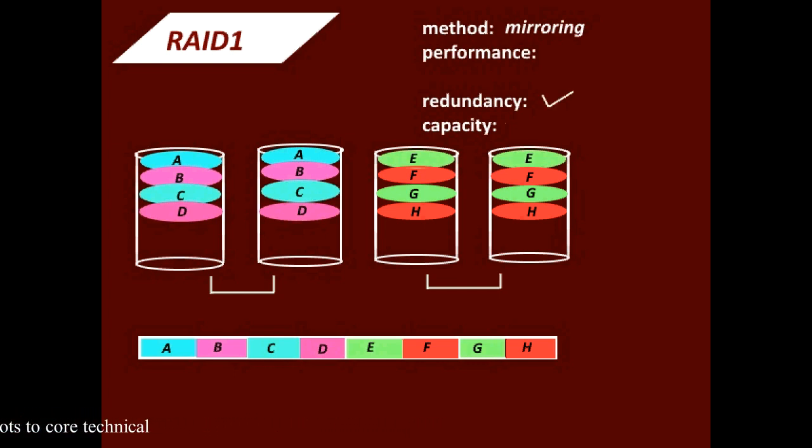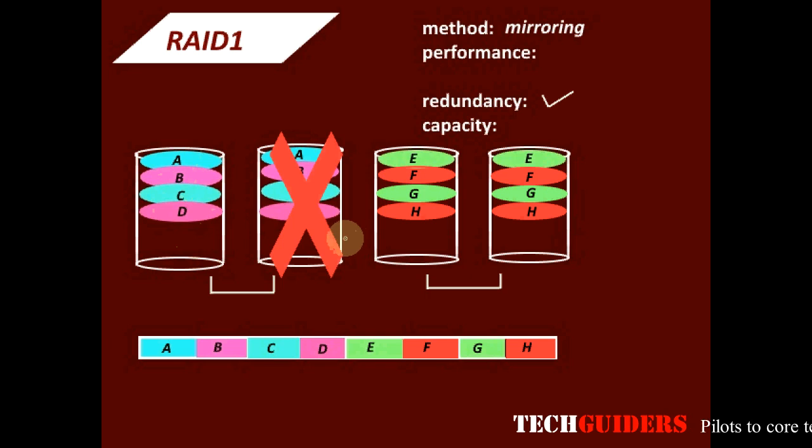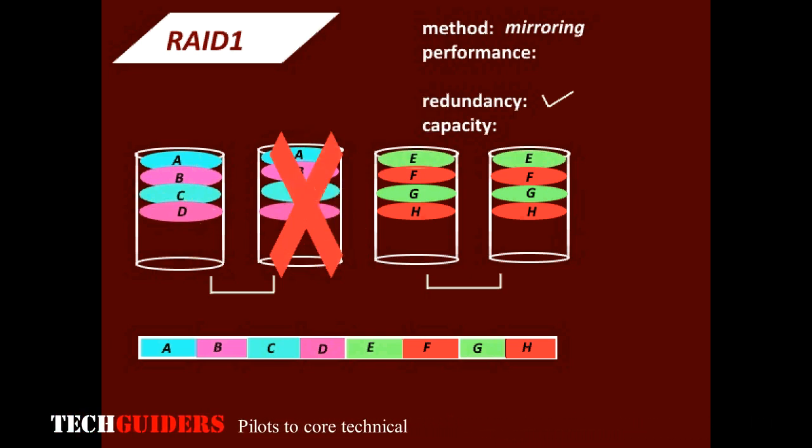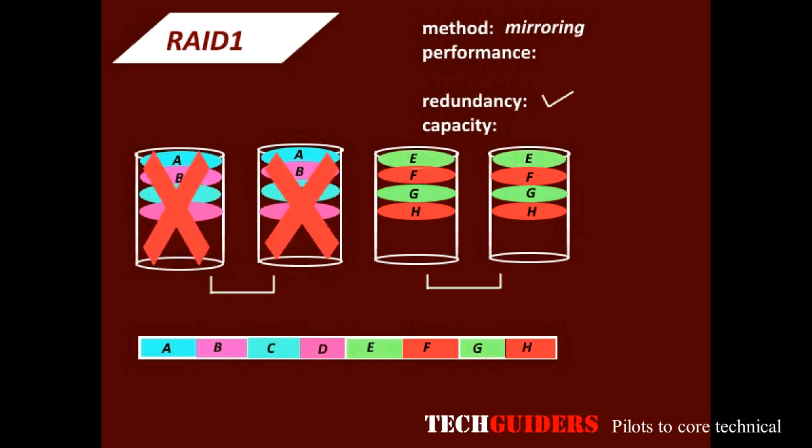Even if one disk fails, our data is safe. We can access the data from the mirror disk and after replacing the failed disk, the data can be rebuilt or recovered from the mirror disk which contains the exact copy. Only if both these corresponding disks fail, our data is lost.